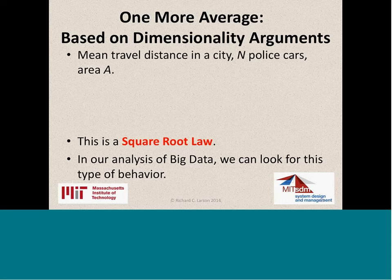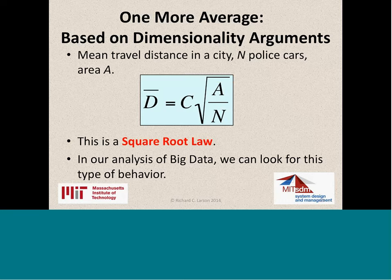Sometimes there are dimensionality arguments. When looking for relationships in data, you can talk about dimensionality. For instance, the mean travel distance in a city — you have a big data set about police cars and 911 calls and responses. A square root law is in place here. If A is the area of the service area and N is the number of police cars, then the average travel distance is proportional to the square root of the area per police car. In big data analysis, we might want to look for this kind of behavior when dealing with spatial data over some XY plane.